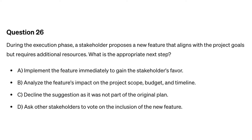Question twenty-six. During the execution phase, a stakeholder proposes a new feature that aligns with the project goals but requires additional resources. What is the appropriate next step? A. Implement the feature immediately to gain the stakeholder's favor. B. Analyze the feature's impact on the project's scope, budget, and timeline. C. Decline the suggestion as it was not part of the original plan. D. Ask other stakeholders to vote on the inclusion of the new feature.